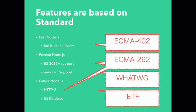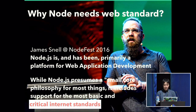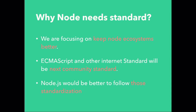As I showed, Node.js features are based on standards: the Internationalization API is based on ECMA-402, ES 2016 and ES modules are based on ECMA-262, the new URL parser is based on WHATWG, and HTTP/2 is based on IETF. Why does Node need web standards? James Snell talked about this at NodeFest 2016: 'Node.js is and has been primarily a platform for web application development. While Node.js presumes a small core philosophy for most things, it includes support for the most basic and critical internet standards.' We are focusing on keeping the Node ecosystem better — ECMAScript and other internet standards will become the next community standard, and Node.js would be better to follow that standardization.